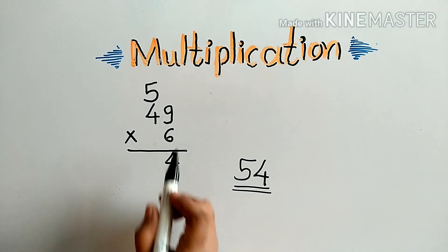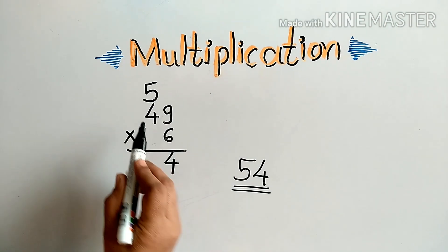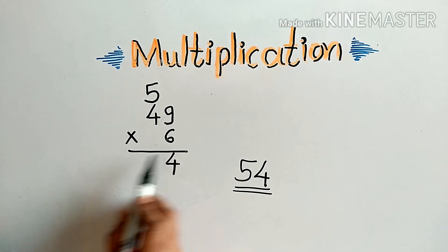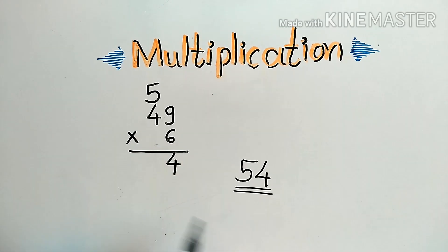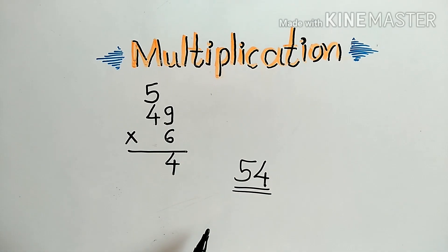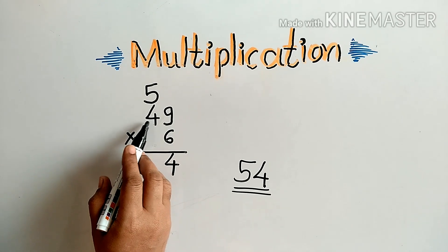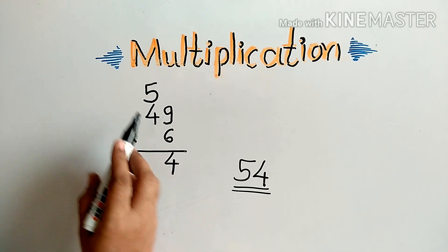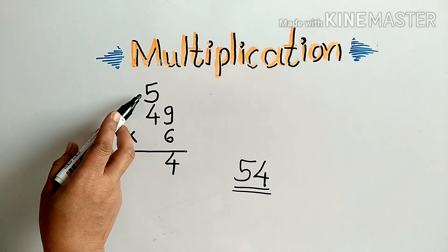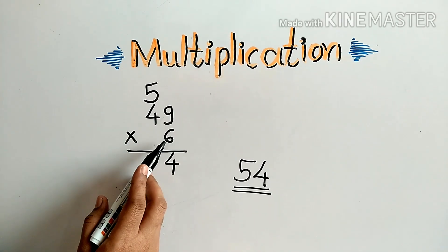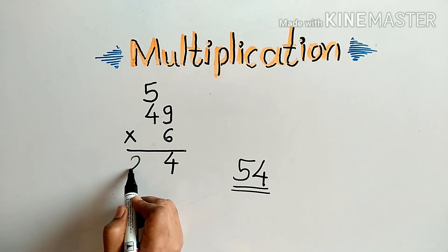After that we will multiply 6 by 4. 6 fours are 24. To 24 we will add the carry over 5. 24 plus 5 is 29. So our answer is 294.